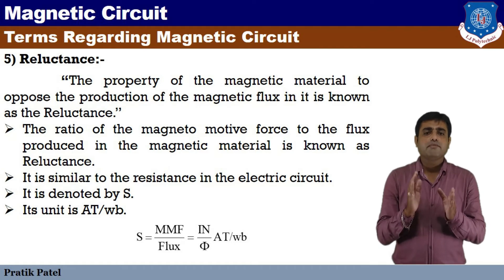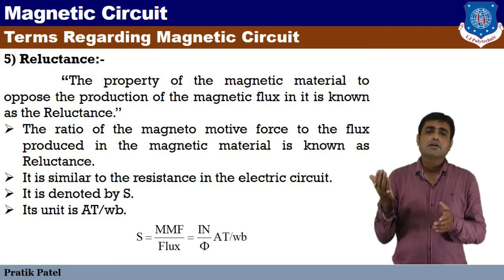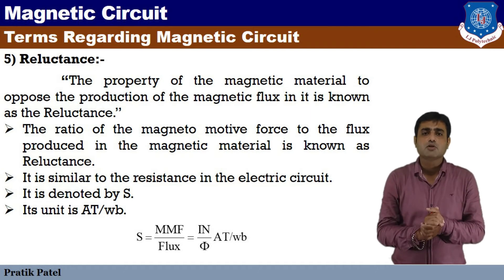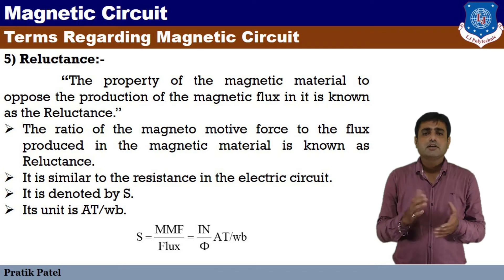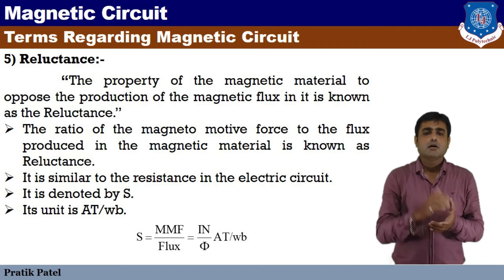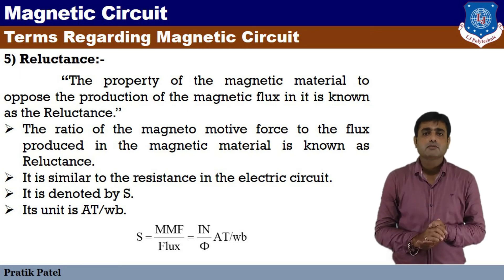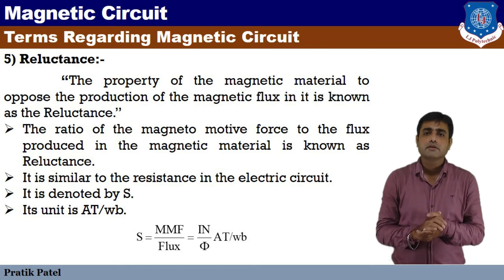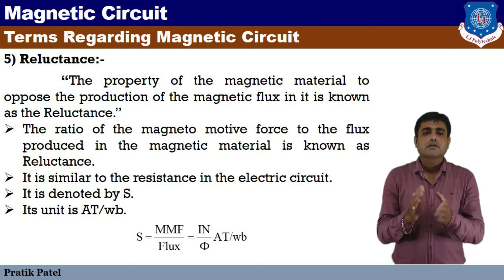The ratio of the magnetomotive force to the flux produced in the magnetic material is known as reluctance. So reluctance S equals MMF by flux. It is similar to resistance in an electric circuit — just as resistance opposes current flow, reluctance opposes magnetic flux. The unit of reluctance is Ampere-turns per Weber.